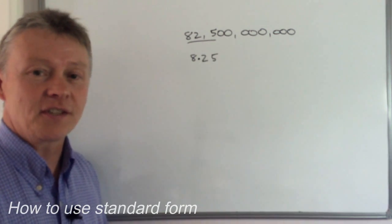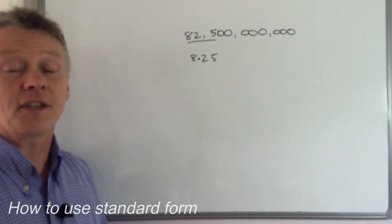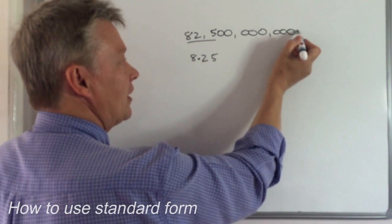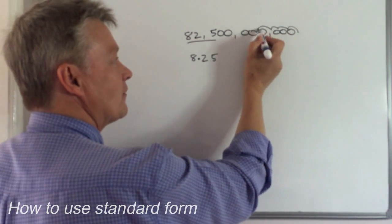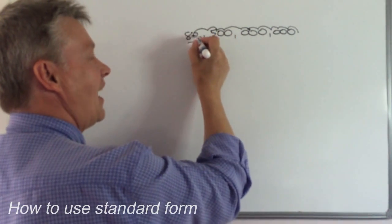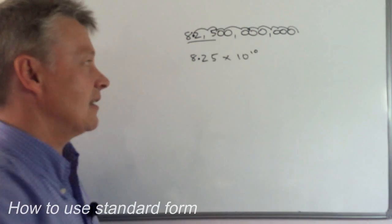And then all I need to do is to tell the person who's reading the number how many places I've moved the decimal point. So it was there and I've moved it once, twice, three times, four, five, six, seven, eight, nine, ten times. So the way I would write it is like that.